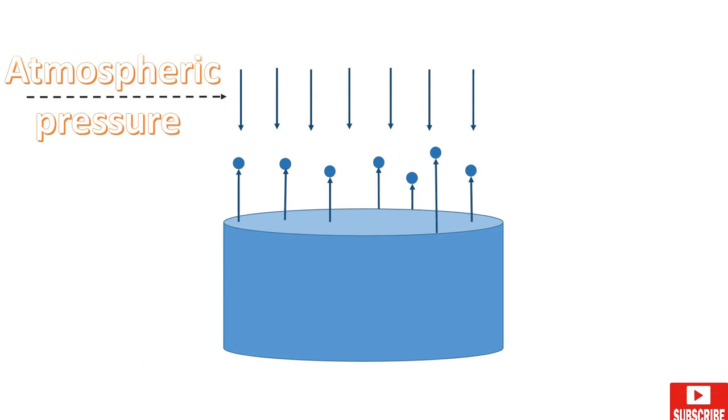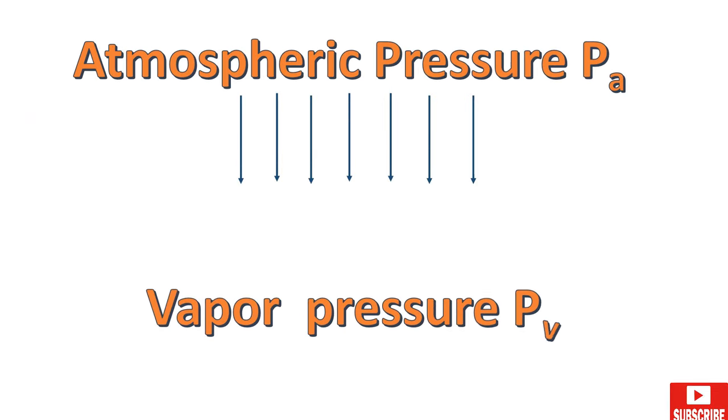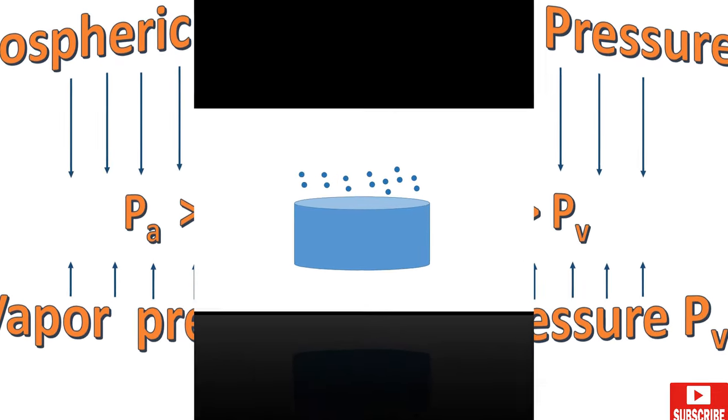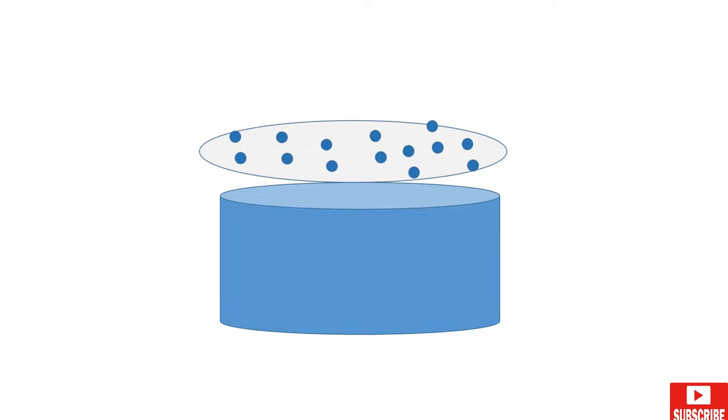The atmospheric pressure is also acting on the free surface of the water. However, the magnitude of the atmospheric pressure is higher than the vapor pressure at normal room temperature so that water molecules remain close to the free surface and they could not escape.